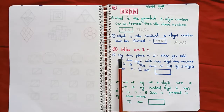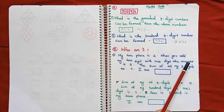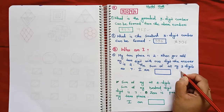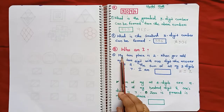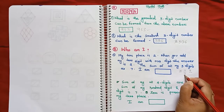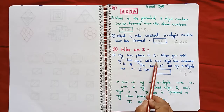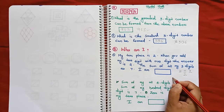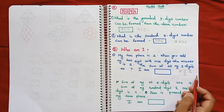Next question: Who am I? My tens place digit is 2. When you add my tens digit with my ones digit, the answer is 2. Also, the sum of all my 3 digits is 7. Who am I?